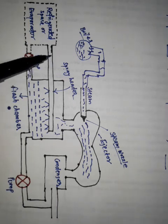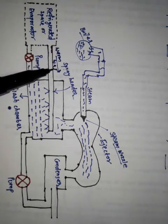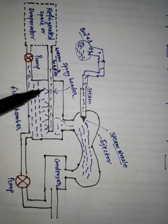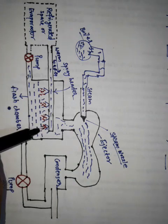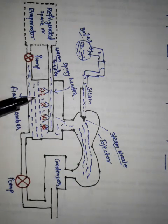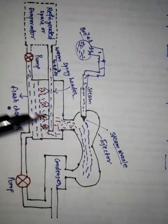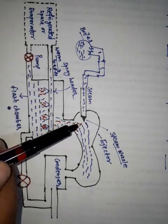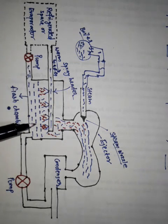The warm water comes from the refrigerated space, and when this water is sprayed through the spray nozzle, vapors form due to evaporation. The vacuum created by the high velocity steam sucks the vapors from the flash chamber and also reduces the pressure.